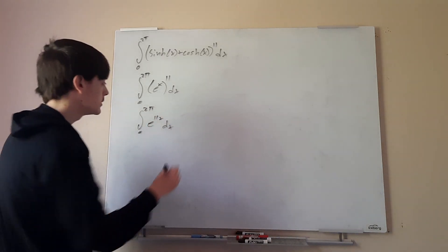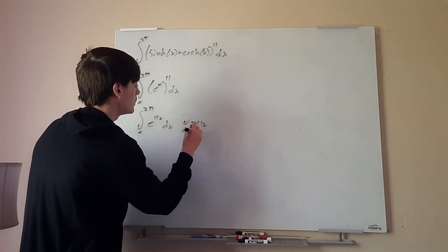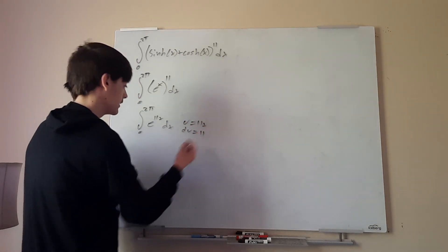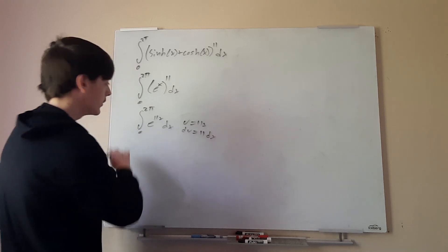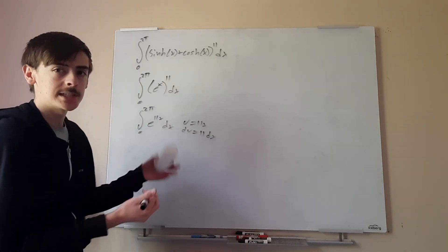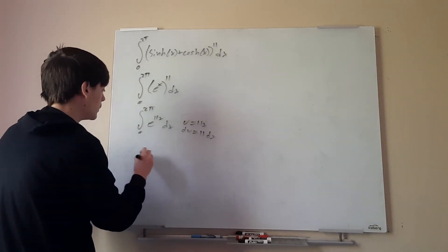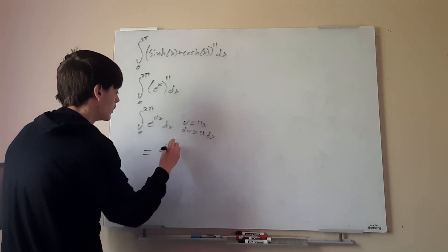Doing a u-substitution, this would be u = 11x, du = 11 dx. We go through with that. I'm not going to go through the process, this is a simple u-sub. But this will equal e^(11x)/11.